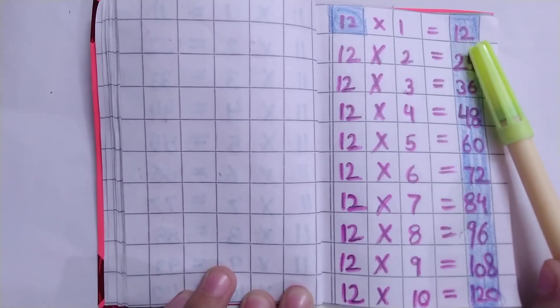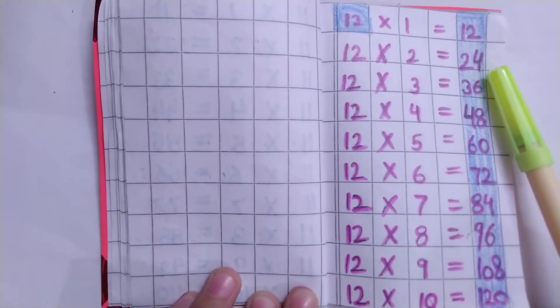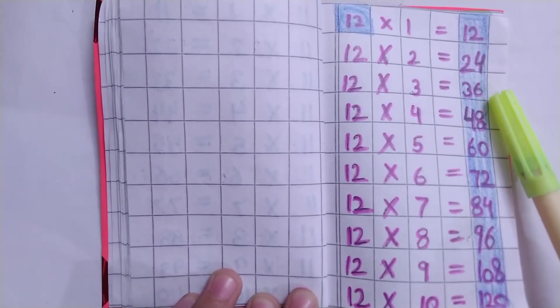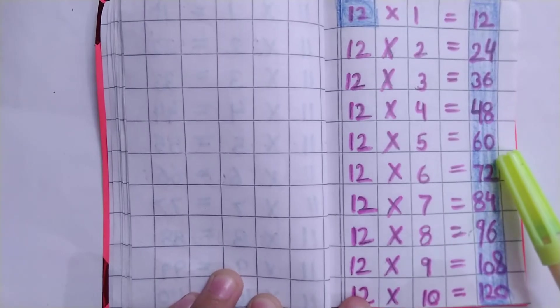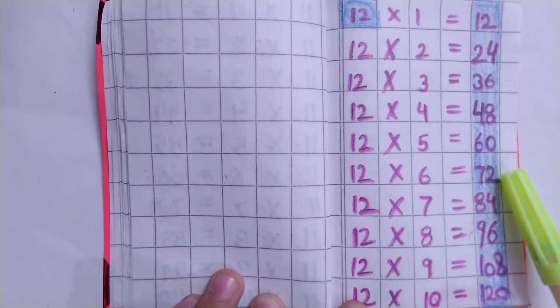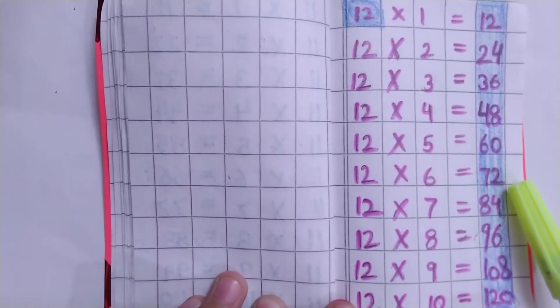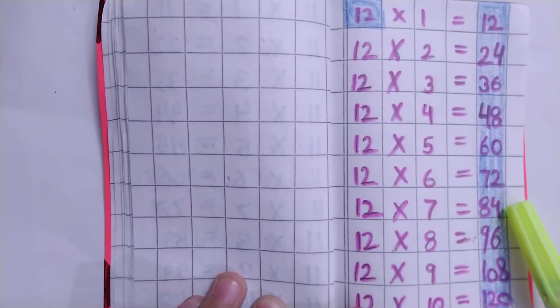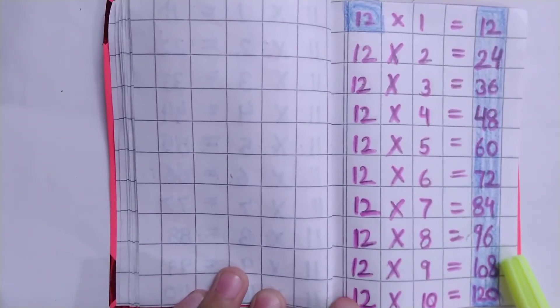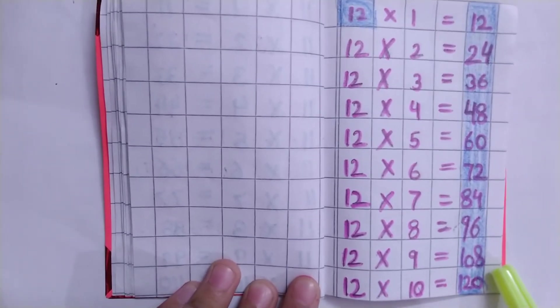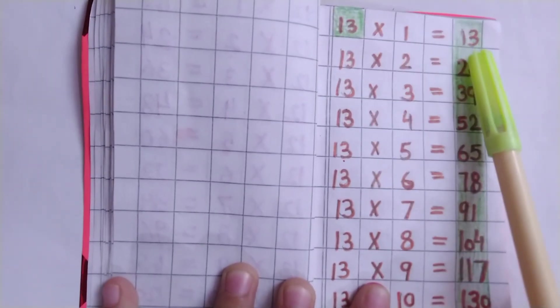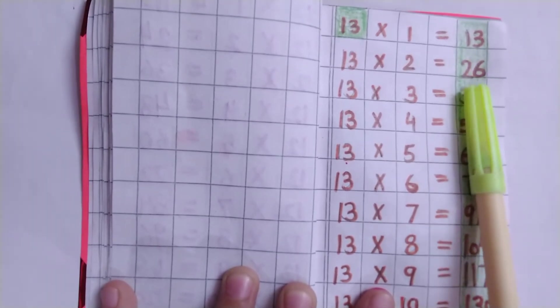Table of 12: 12×1=12, 12×2=24, 12×3=36, 12×4=48, 12×5=60, 12×6=72, 12×7=84, 12×8=96, 12×9=108, 12×10=120.